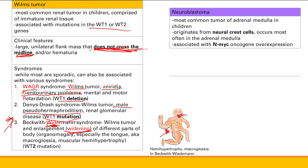In contrast, neuroblastoma is the most common tumor of the adrenal medulla in children. The adrenal gland sits right above the kidneys. This tumor arises from neural crest cells, and while it most commonly occurs in the adrenal medulla, it can occur anywhere along the sympathetic chain. Neuroblastoma is associated with NMYC oncogene overexpression.